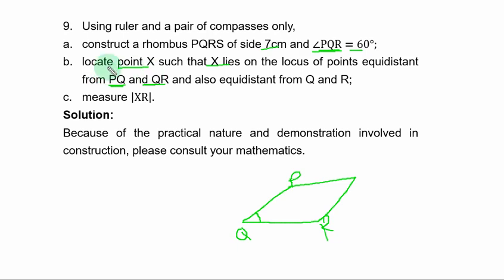Now you should locate point X such that X lies on the locus of points equidistant from PQ and QR. This is PQ, this is QR. So from this point, you draw one arc here and you draw another arc here. Then you come to this point also.